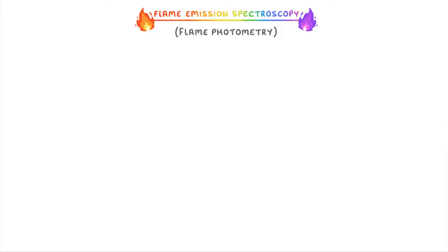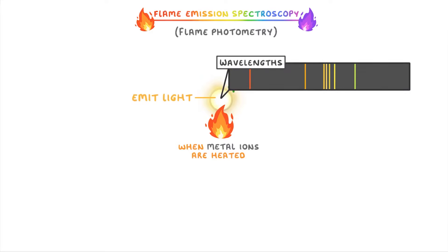The underlying idea is the same as the more simple flame test, namely that when metal ions are heated, they emit light, and the wavelengths of that light, and so the color that you can see, are specific to the particular metal ion that you're heating.